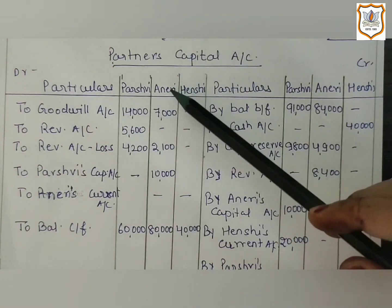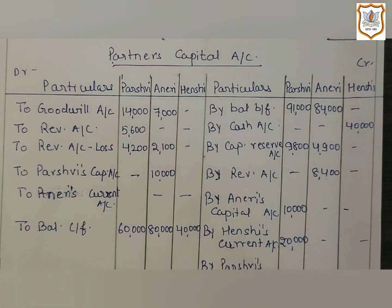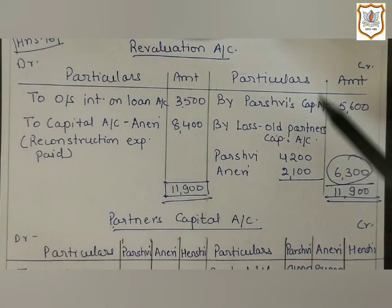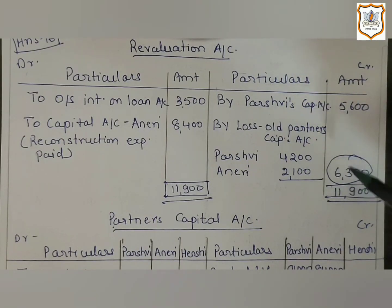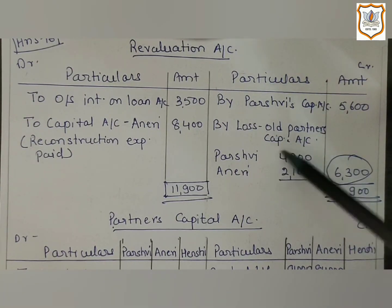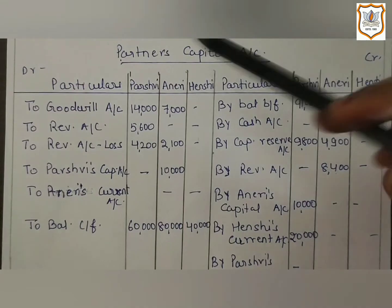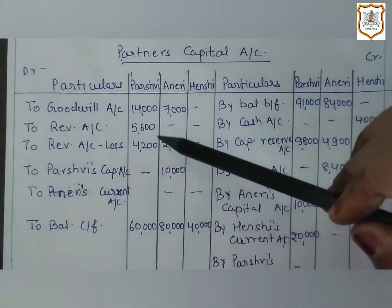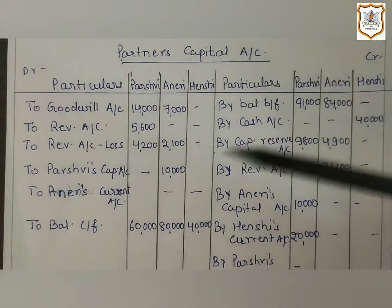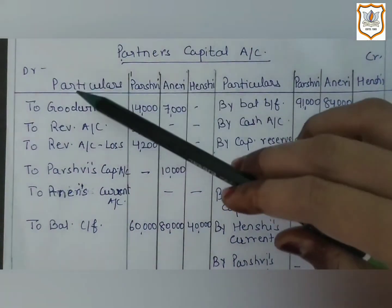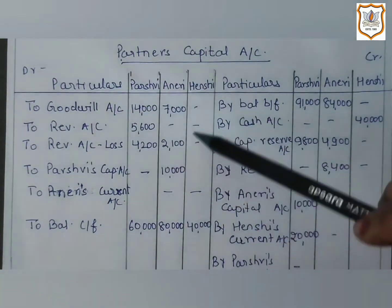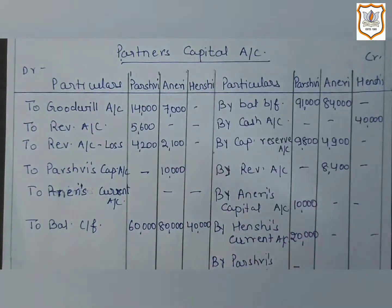After recording remaining items from the old balance sheet, we close the Revaluation Account. On closing it, the difference appears on the credit side — it is a revaluation loss, which will be distributed among old partners in their old ratio and transferred to the Partners' Capital Account on the debit side as a loss, reducing capital. The amounts are 4,200 and 2,100.